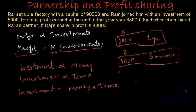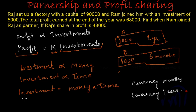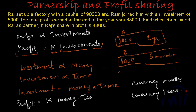The unit you can call it as currency-time, currency-month, or currency-year. From here we can say that profit is actually equal to some K times money multiplied by time. So profit = K × money × time, and this time can be either in years, months, or days — whatever unit you are using to calculate the time for which the money is invested. The value of the constant K is completely dependent on the profit earned by the business.